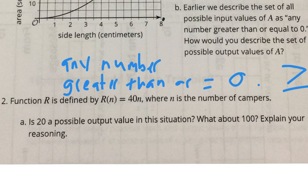Function R is defined as R(n) = 40n, where n is the number of campers. Is 20 a possible output for this situation? It's not. When you're talking about 16, you're talking about input. Where n is the number of campers, the output is the revenue made. How much money were they making? So could they have made $20 in any circumstance? No. What would have to happen to make $20? Half a camper.